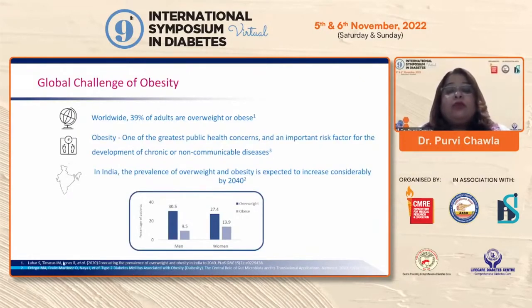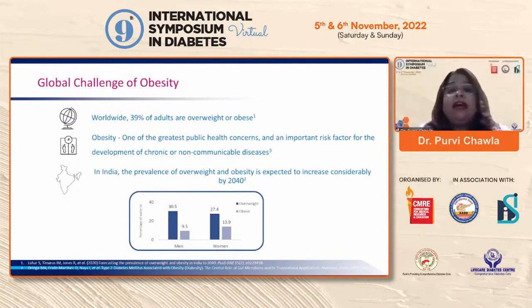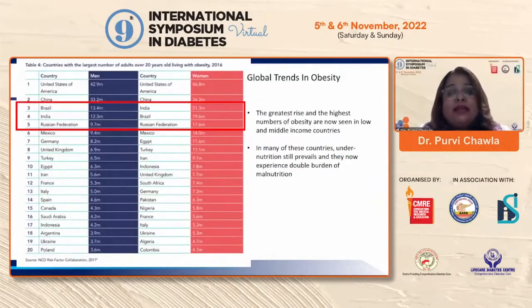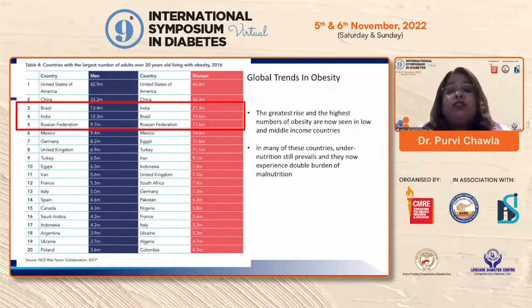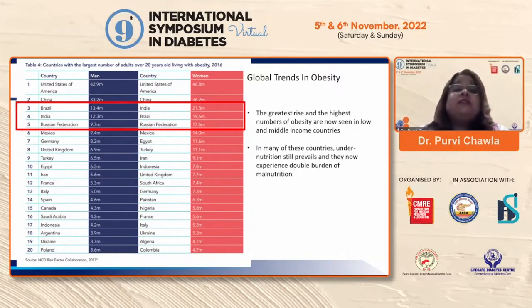The global challenge of obesity: more than 30 to 40 percent of the world's population is overweight or obese, and this is increasing multifold. We as physicians are dealing with this every single day. Despite the dual problem of malnutrition — both undernutrition and overnutrition — the greatest rise and highest numbers of obesity are now seen in low and middle income countries, and India is in the top five, with a particularly high prevalence in women.